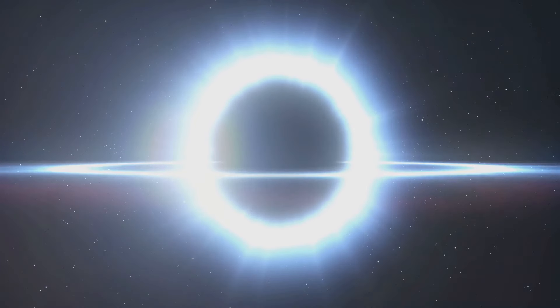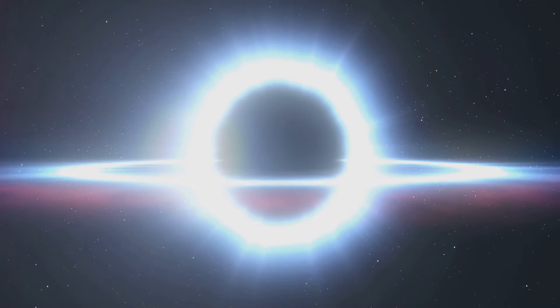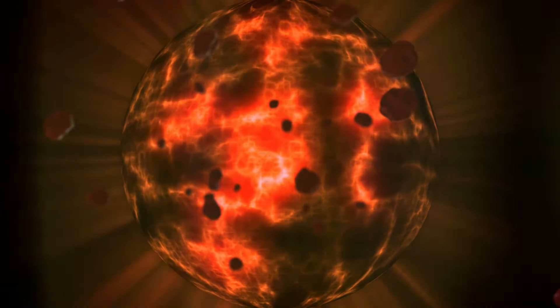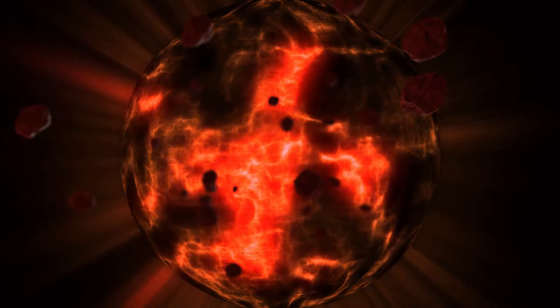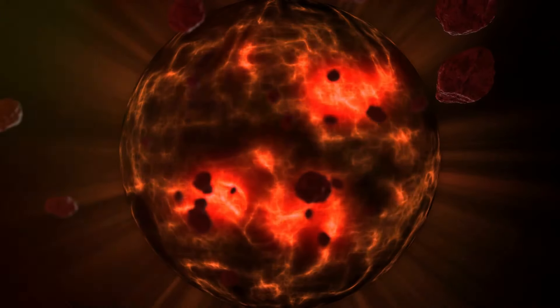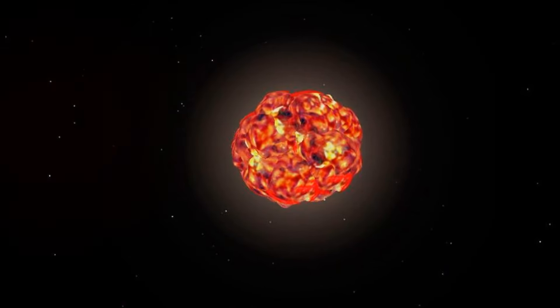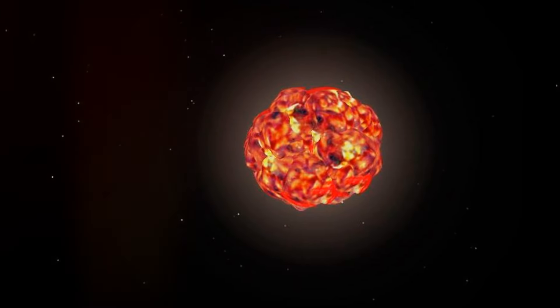Betelgeuse, however, was destined for a more dramatic path than our own sun. It was much more massive, and this mass dictates a star's fate. More massive stars burn brighter but live shorter lives racing through their fuel reserves, and so Betelgeuse evolved into a red supergiant, its outer layers expanding outward as it approached the end of its stellar life. The inevitable end awaits.